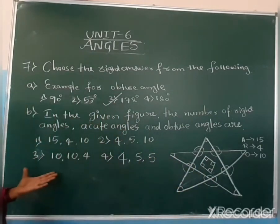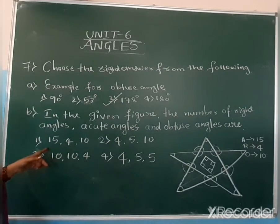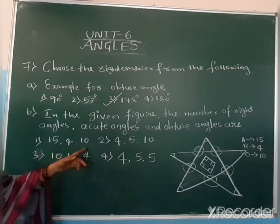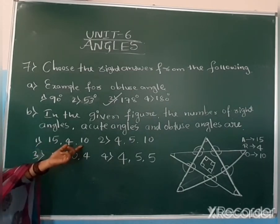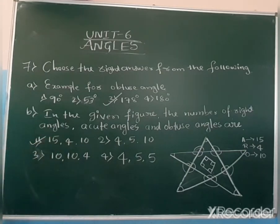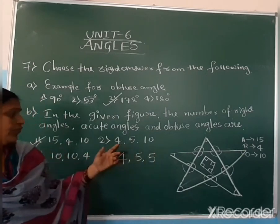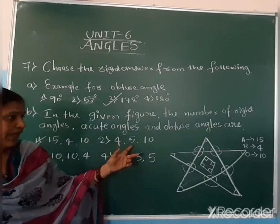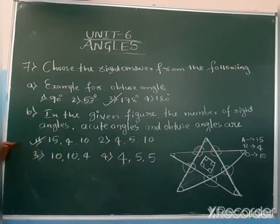The options given are: Option 1 — 15, 4, 10; Option 2 — 4, 5, 10. So 15 acute angles and 4 right angles are correct, but obtuse angles are 10. The first option, 15, 4, 10, is the correct answer.